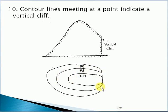Generally, this is how the contour line looks. If this is a vertical cliff, the contour lines would appear in this manner.